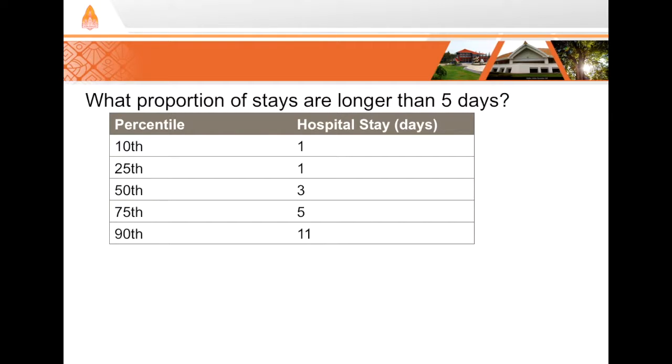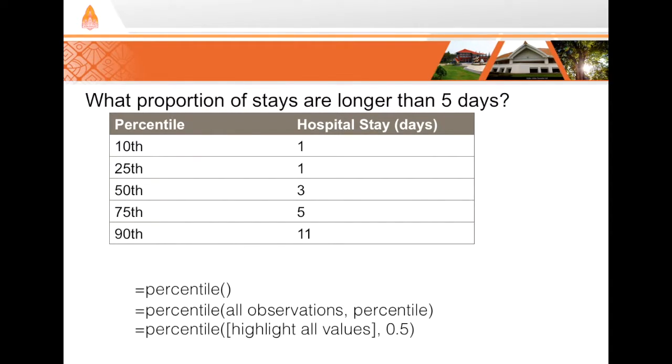We can generate a table like this one using Excel or any statistics program. So for example, in Excel, you can use the function PERCENTILE. That function requires two inputs: first it needs all of the data or all of the observations, so the full data set, and then secondly, what percentile that you want to know. So if you want to know the 50th percentile, you would highlight all the values in Excel for the first argument and then type 0.5 for the second argument to get that data's 50th percentile. And so the results would be 3 from this data set. In other words, the 50th percentile is 3 days.